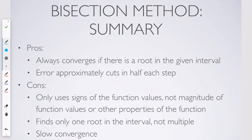Okay, so in summary of the bisection method, here's how I think about it. It always converges. You're just bracketing in on a root. So if there is a root in the given interval, it will converge to a root. And the error approximately cuts in half each step. Or we can say the error bound does cut in half each step.